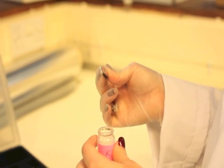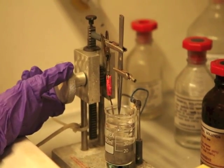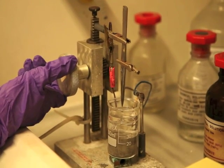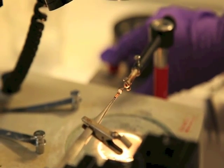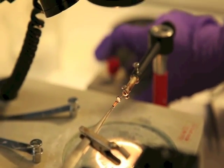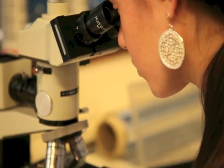The first step in creating an atom probe data set is to fabricate a very sharp needle from your material. Starting from a 1 mm by 1 mm matchstick, we move the sample up and down through a layer of acetic acid, which removes small amounts of material. We continue this dunking process until the desired tip profile is obtained. This process is called electropolishing.